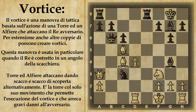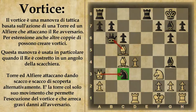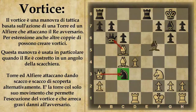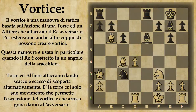Vediamo ora un caso tratto da una partita veramente giocata: stiamo parlando della partita tra Byrne e Fischer. Byrne è il bianco e Fischer è il nero, e la mossa sta al nero. Al momento il materiale è abbastanza pari, però il nero ha questo cavallo minacciato e inoltre ha minacciata la donna, quindi sembra che in qualche modo il nero debba perdere del materiale. Tuttavia Fischer intuisce una mossa veramente spettacolare e si prepara a mettere a punto un vortice, però stavolta non di torre-alfiere ma di alfiere e cavallo. Fischer ha giocato alfiere e6 e incredibilmente lascia la propria donna impresa.